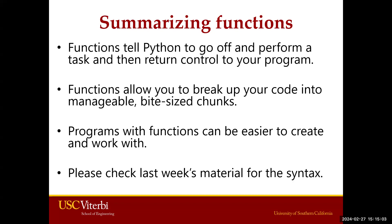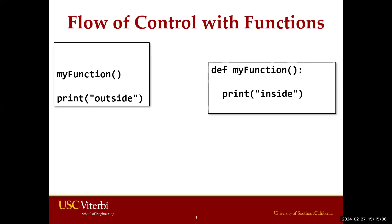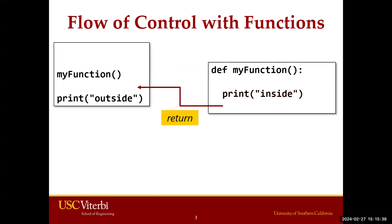Please check last week's material for the syntax of functions. Remember the flow of control with functions. In this example, on the right side, we see the function definition — you see the def, function name, and parentheses. When you call a function in Python, which is the red one here — my function with parentheses — you go to the definition and run everything in that definition. So in this case, we call my function and it prints the inside keyword. After we are done with the function, we return control to the program and continue after that line, printing the outside keyword.